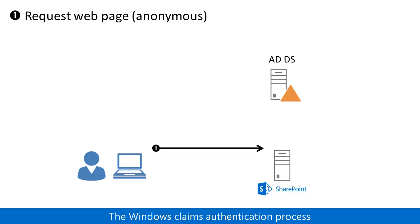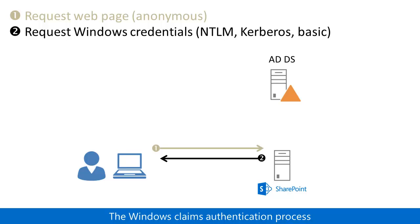Assuming that the client does not already have a claims-based security token, Windows Claims Authentication occurs when it makes an initial anonymous request of a secured SharePoint web page. The SharePoint server responds with a request for the user's Windows credentials, which can be sent using the NTLM, Kerberos, or basic authentication protocols.